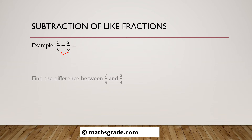How to subtract like fractions? Just write down the denominator, which is 6 — and the LCM of 6 and 6 is also 6. Subtract only the numerators: the numerator of 5/6 is 5, and the numerator of 2/6 is 2. Subtracting 5 minus 2, we get 3. So we have 3 divided by 6.